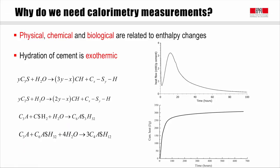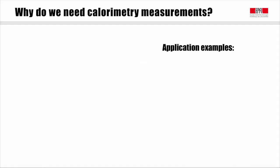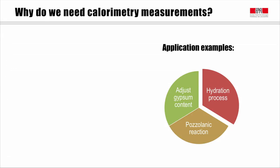The pictures on the right side are typical curves we can obtain from calorimetry measurements. In the cement field, isothermal calorimetry is often used for purposes such as following the hydration processes, adjusting gypsum content, or checking the pozzolanic reaction of supplementary cementitious materials.